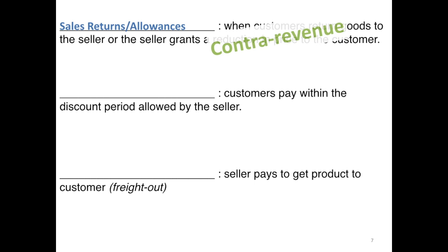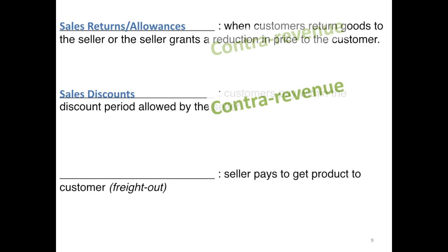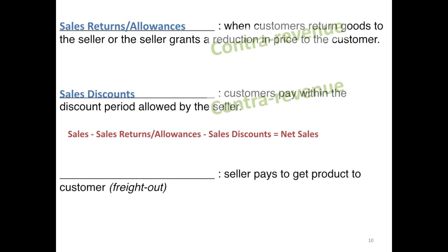In addition, we may sometimes give a customer a discount. Maybe they pay early, which we want them to do, so we give them an incentive to send in their payment early — that's called a sales discount. This is also a contra revenue account. Now that we have our sales revenue and two contra revenue accounts, we can compute net sales by taking sales revenue less sales returns and allowances and less sales discounts.